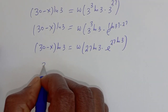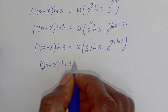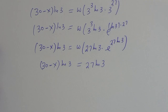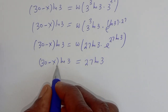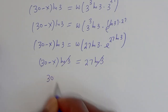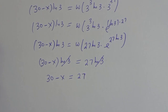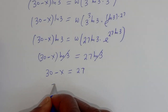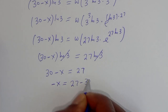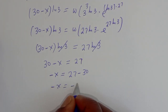From here we have 30 minus s times ln of 3 is equal to 27 times ln of 3. Therefore 30 minus s is equal to 27, then minus s is equal to 27 minus 30, and minus s is equal to minus 3, so s is equal to 3.